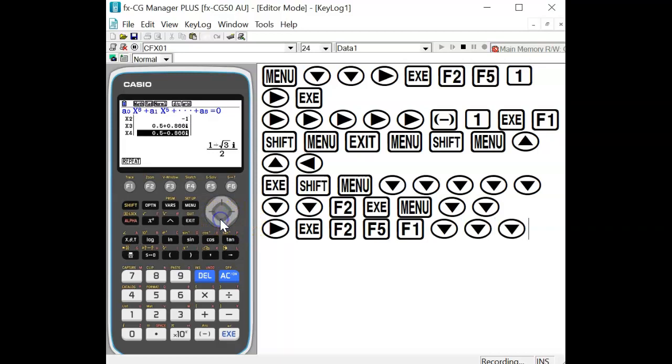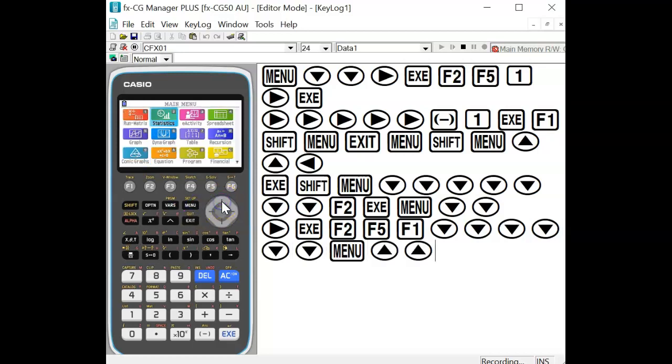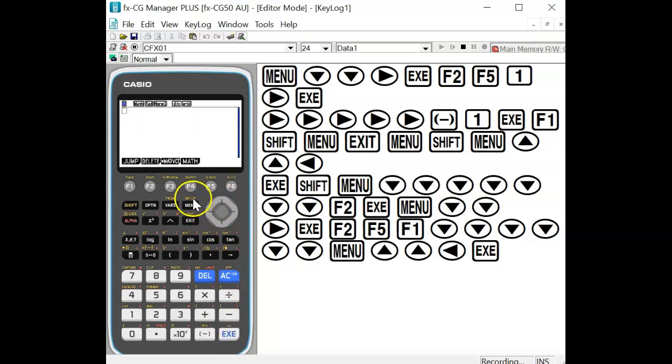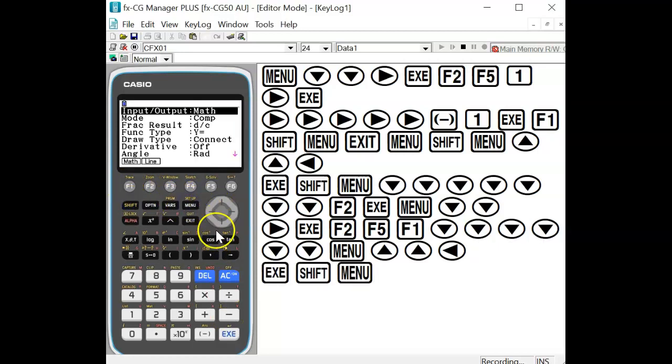If we highlight a particular solution, we'll be given the value in exact form. The other form we may wish to see our solutions in is polar form. To do that, again we go back into our run matrix form.